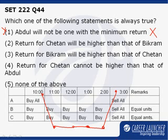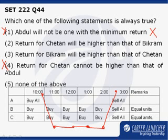Now, looking carefully at option 4, it says the return for Chetan cannot be higher than that of Abdul. In the same example we have taken, we can see that Chetan is getting a higher return than Abdul. So option 4 also gets ruled out from the same example.